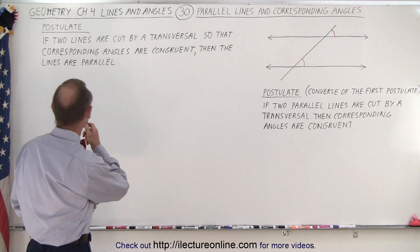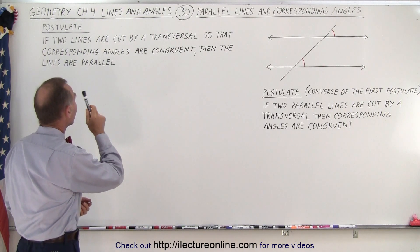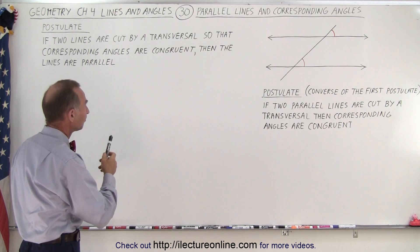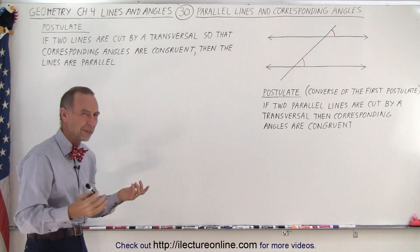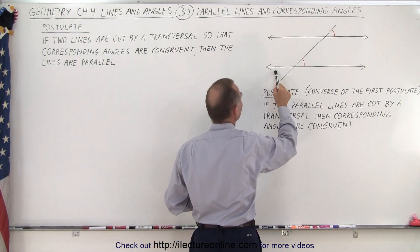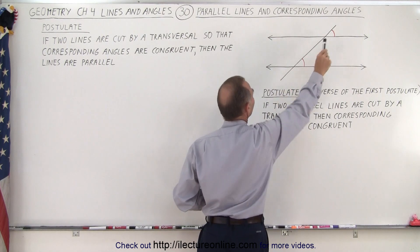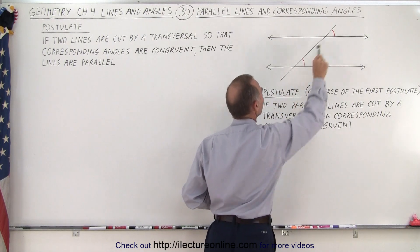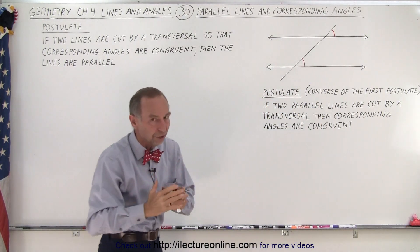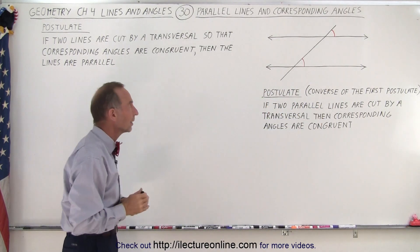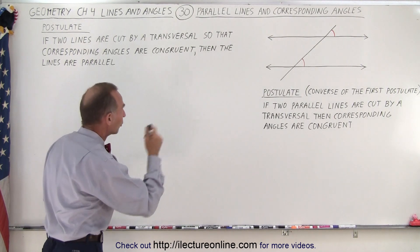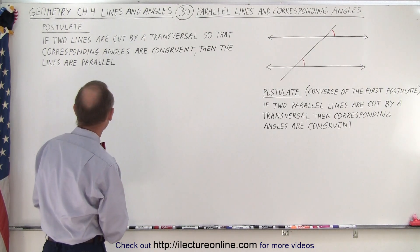The first one says: if two lines are cut by a transversal. Here we have two lines, and here we have a line that cuts across at some angle — it doesn't matter what the angle is. That line is called a transversal, and it's cutting through those two lines.